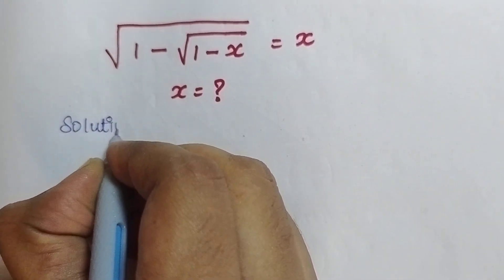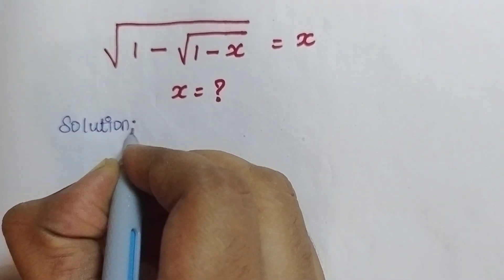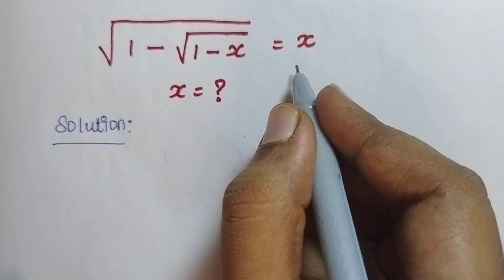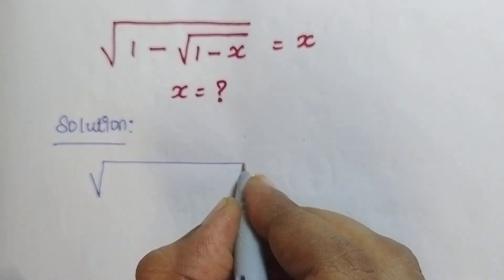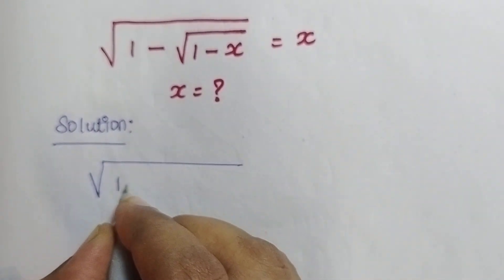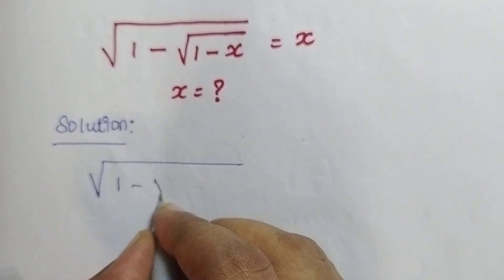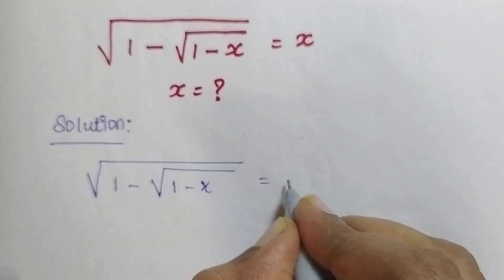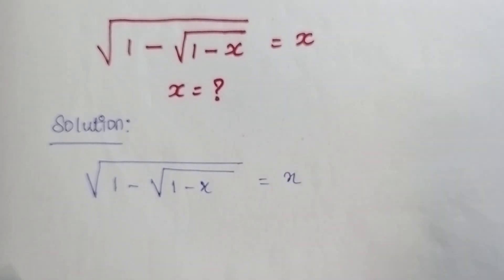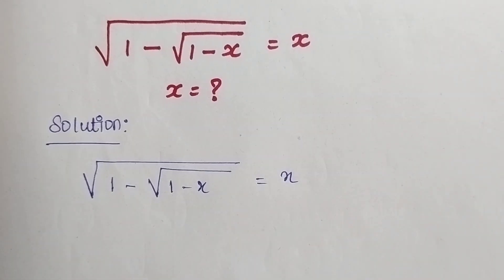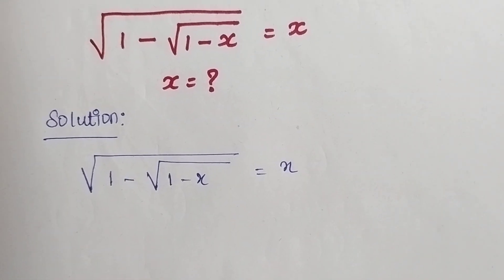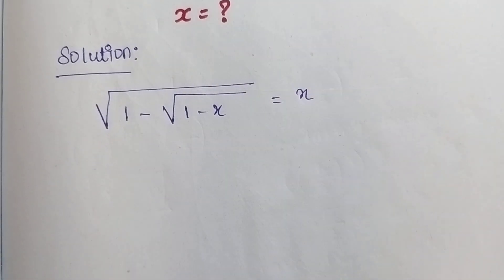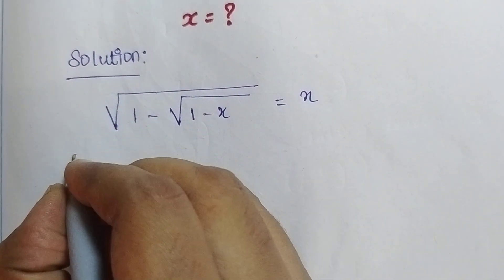Here the solution is: first I am going to write the question here. The question is √(1 - √(1 - x)) which is equal to x. We need to remove the square root, so what do we have to do? We need to take the square on both sides.